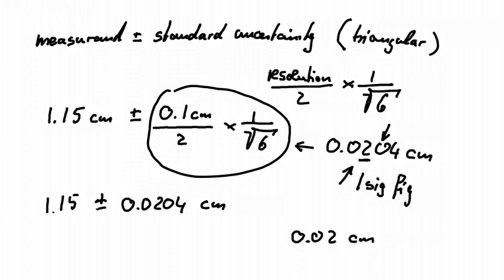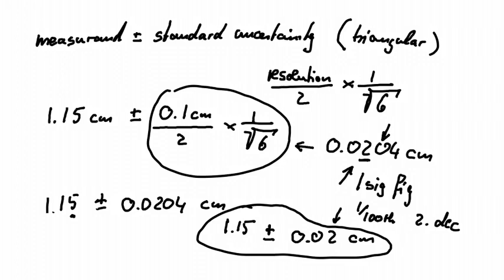Now this 2 is in the one hundredths place, the second decimal place. Therefore, we need to report our measurement also to two decimal places. So we would report it as 1.15 plus minus 0.02 centimeters. And that is how we would report our measurement.